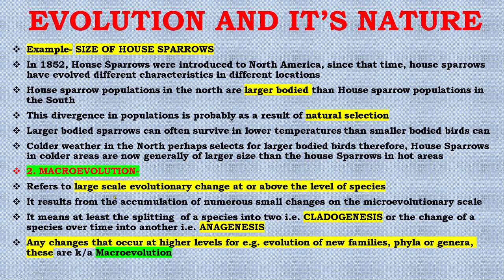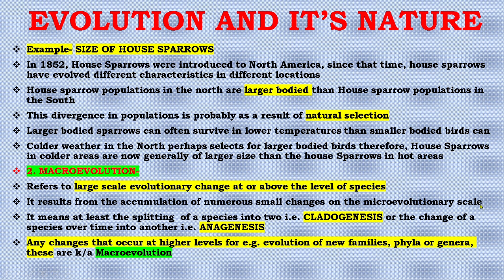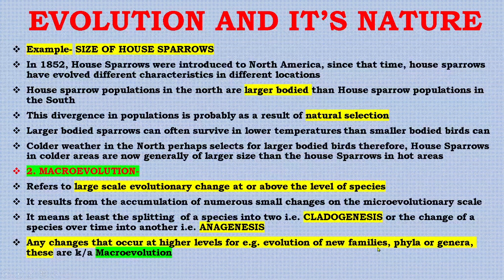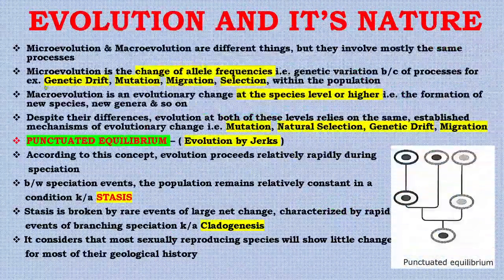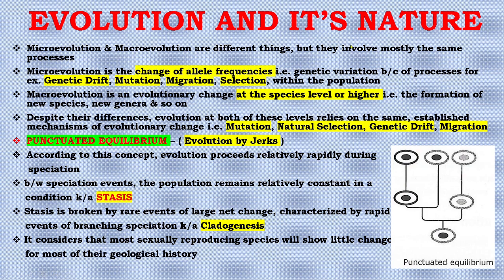The second category is macro-evolution, which generally refers to large-scale evolutionary change at or above the level of species. It results from the accumulation of numerous small changes at the micro-evolutionary scale. It means at least the splitting of a species into two — that is cladogenesis — or the change of a species over time into another species — that is anagenesis. Any change that occurs at higher levels, such as the evolution of new species, families, phyla, or genera, falls into this category.